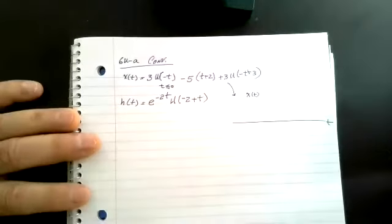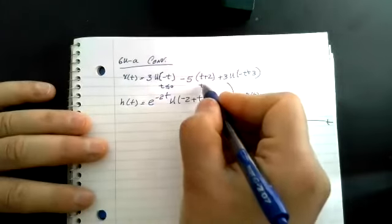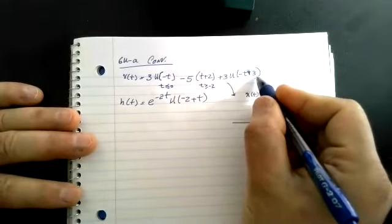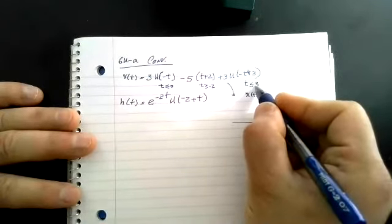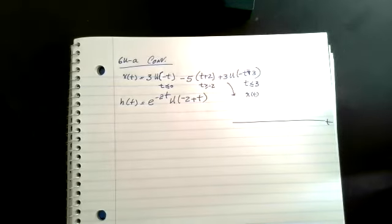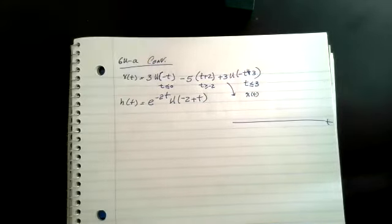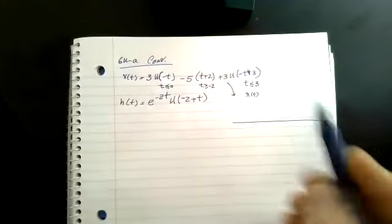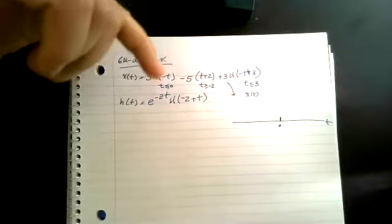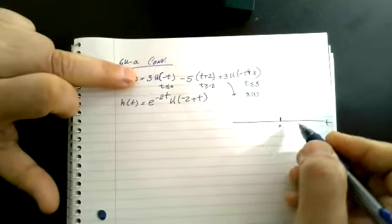This one says T has to be larger or equal to minus two. And this one — minus T plus three — has to be larger than zero, which means T has to be less than or equal to three. So if it was just up to this term, from zero back the value would be three, because the magnitude is three.